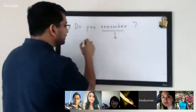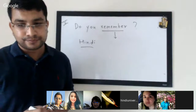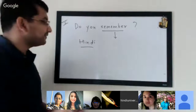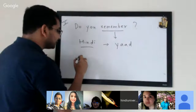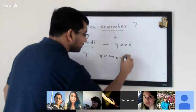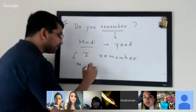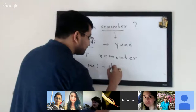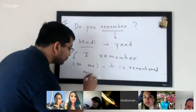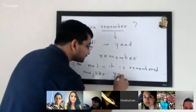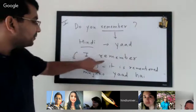Do you know the Hindi word for 'remember'? The simple sentence 'I remember,' if you translate it directly from English, is 'to me, it is remembered.' So 'I remember' is 'mujhko yaad hai.' Here 'yaad' is a noun, that's why it's 'mujhko.'